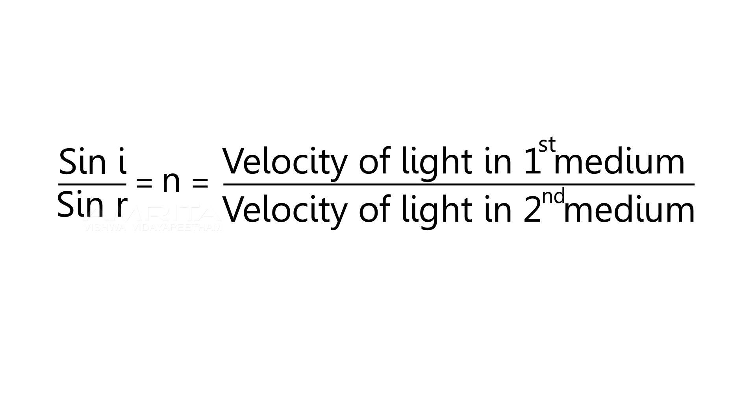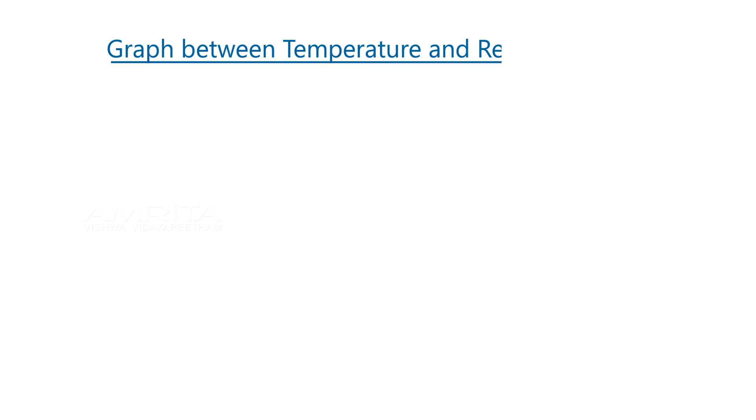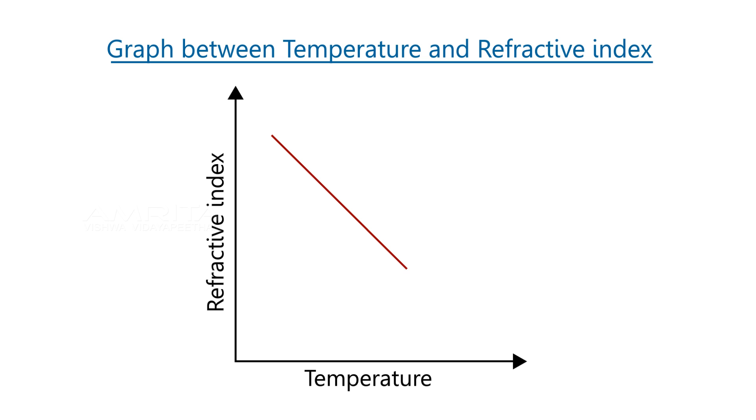For medium 1 which is vacuum, the above ratio is known as the refractive index of medium 2, which is always greater than unity. Refractive index depends on the density of the measured sample, which is affected by its temperature. Refractive index increases as temperature decreases.